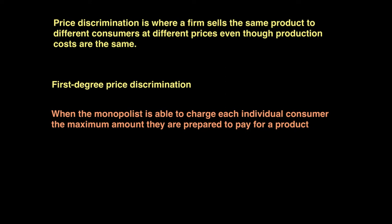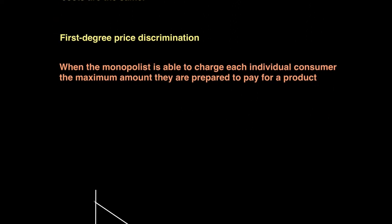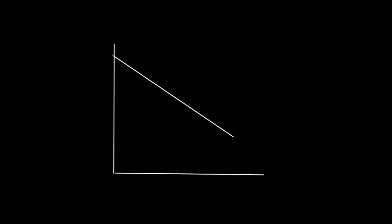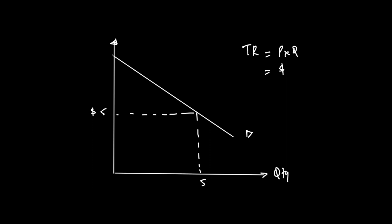Let's see first degree price discrimination through a diagram. If I draw a demand curve, with no discrimination, each consumer is charged $5 per unit. For five units, the producer makes a total revenue of price times quantity — $5 × 5 = $25.